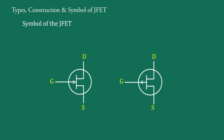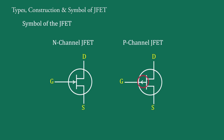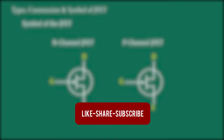The schematic symbol of JFET is as follows. This symbol is for N Channel JFET and this is for P Channel JFET. In N Channel JFET, the arrow of the gate lead is drawn in the inward direction. This is the basic information of JFET. In the next video, we will discuss the working of JFET.